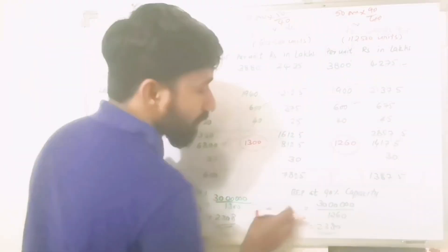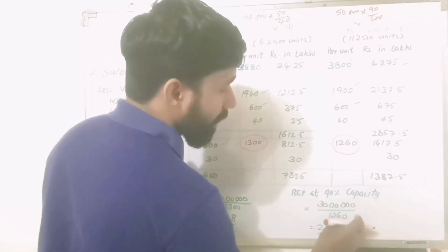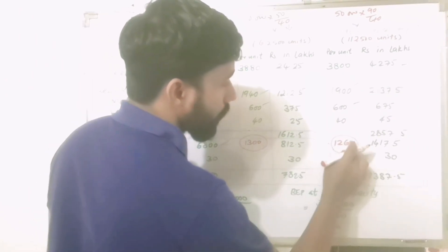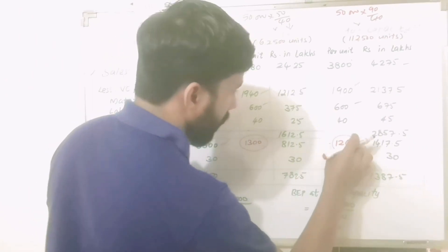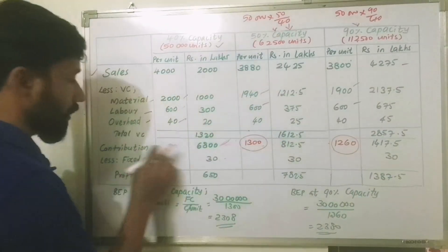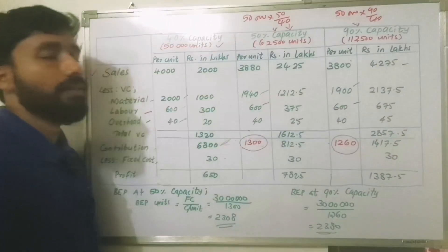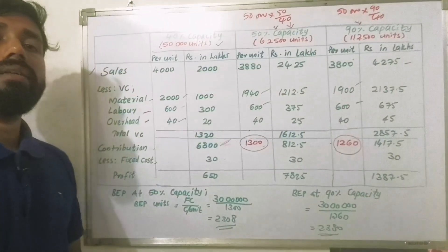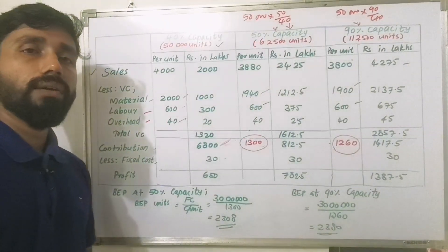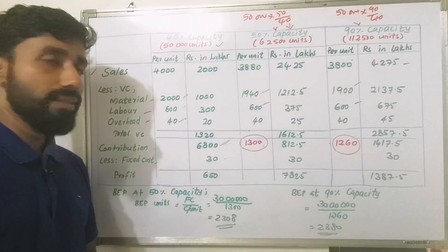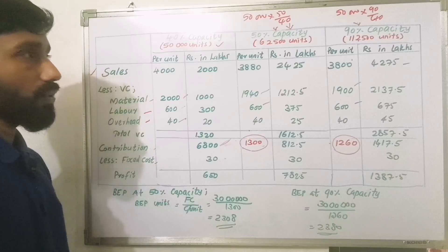At 90% capacity, BEP is 30 lakhs divided by contribution per unit of Rs. 1,260, giving approximately 2,380 units BEP. We then calculate the full Marginal Cost Statement profile.